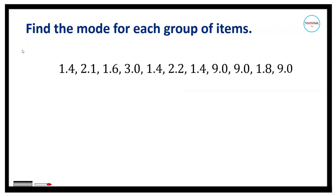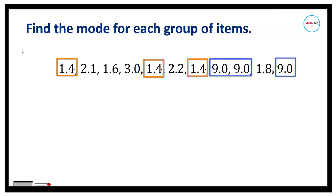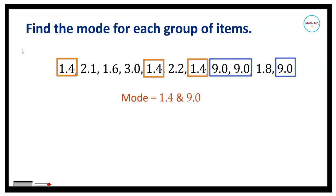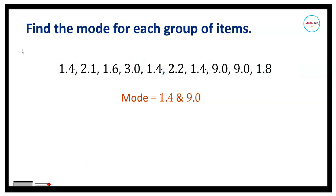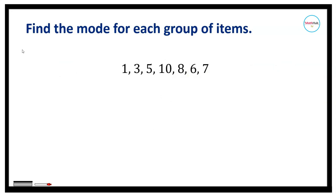Next, we will consider this set of data. Upon examining the entries, we notice that 1.4 and 9.0 both appear three times. This is an example of a bimodal set, which means we have two modes. In this case, the modes are equal to 1.4 and 9.0, since both numbers appear three times.